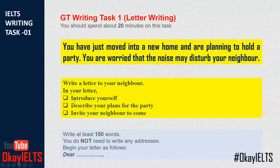Next, you should always read the bullet points carefully because these bullet points will help you — you have to answer all of them. You should always write your letter in the format of the given bullet points. If the examiner finds all the answers related to those bullet points, you'll get a good band score. The first bullet point says introduce yourself. Second, describe your plans for the party. Third, invite your neighbor to come. So you can divide your letter into three paragraphs — one for each bullet point. I hope the task is pretty much clear now.